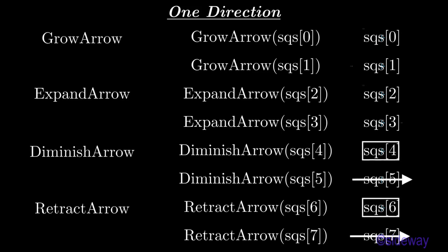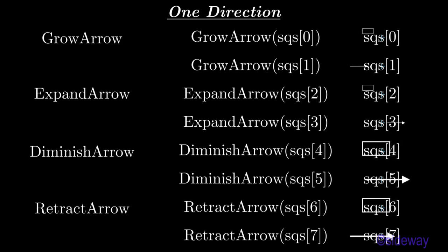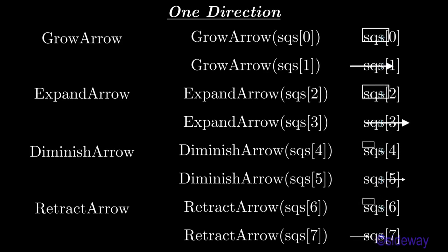GrowArrow method is used to grow a mathematical object at a start point animatedly. ExpandArrow method is used to grow a mathematical object at an end point animatedly.